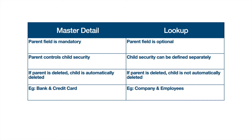Company and employees have a lookup relationship because employees are not completely dependent on the parent. If a company stops existing and they want to switch jobs or move to a different company, employees are free to do so. That dependency is not a hard dependency; it's a nominal dependency. So for master-detail, the parent field is mandatory; for lookup, the parent field is optional.